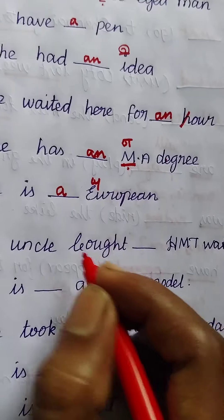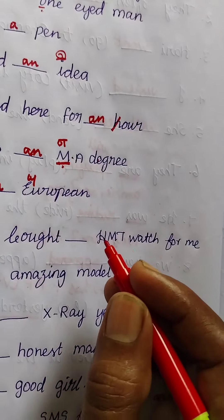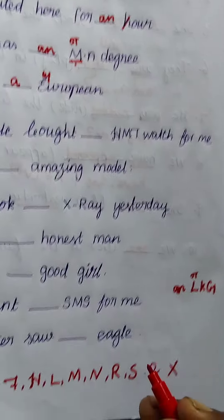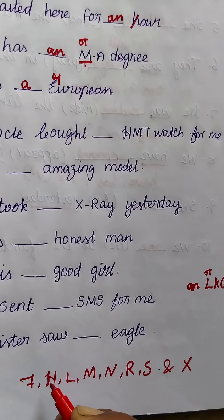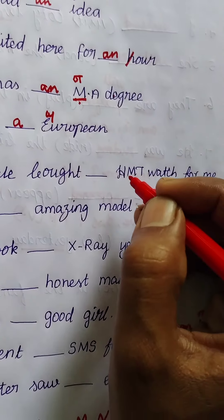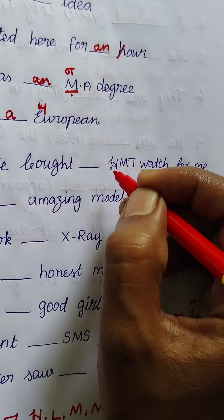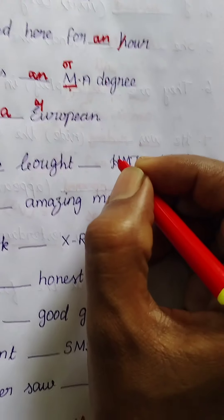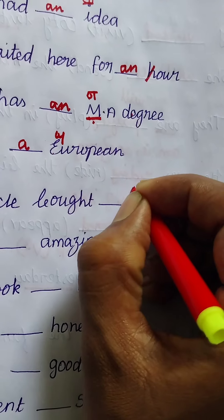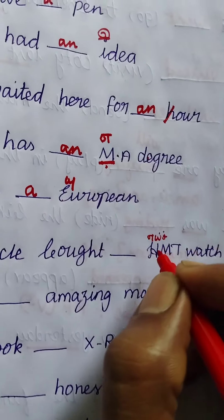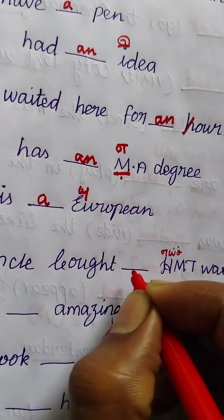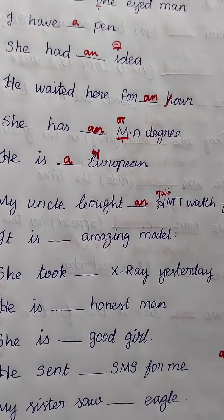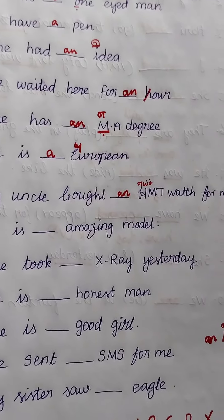Next: 'My uncle bought ___ HMT watch for me.' The abbreviation HMT — only the first letter matters. H is in our list of 8 consonant letters. When you say H, the sound is 'aitch' — a vowel sound. Hence the answer is 'an'. So: 'My uncle bought an HMT watch for me.'